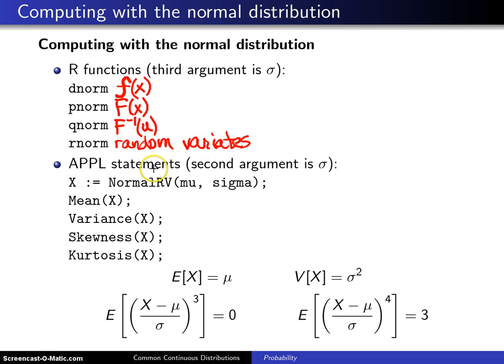The APPL statements, once again, second argument is again sigma, not sigma squared. You begin by setting the random variable x equal to a normal random variable with parameters mu, the population mean, and sigma, the population standard deviation. APPL will accept symbolic parameters in this particular case. So when you take the mean of x, it will return mu.